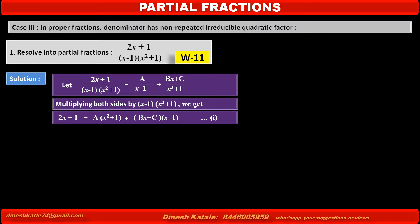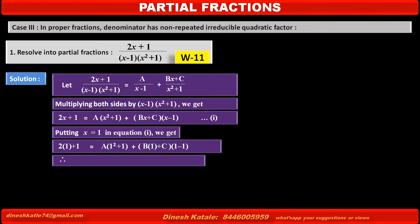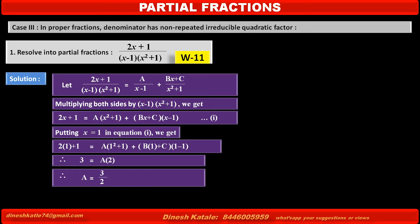We now find the values of A, B, and C. It is easy to find A first. Setting the factor x minus 1 equal to 0 gives x equal to 1. Substituting x equals 1 into equation 1: the left-hand side becomes 2(1) plus 1 equals 3, and the right-hand side gives A into (1 squared plus 1) equals A into 2. Therefore, A equals 3 upon 2.